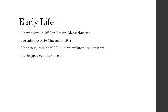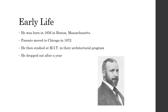A brief look at his childhood and early adulthood. He was born in Boston in 1856. His parents moved to Chicago in 1872. He studied at MIT in the architectural program, which was the first in the nation at that time — a very prestigious college. He dropped out after a year to practice architecture rather than study it.